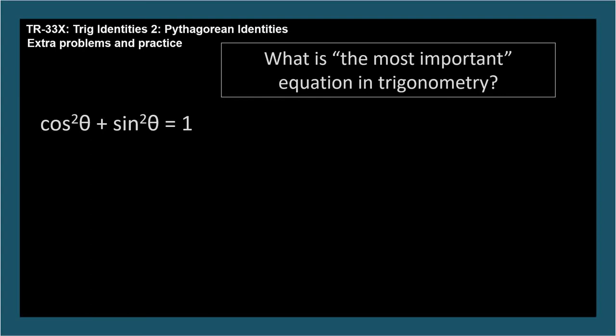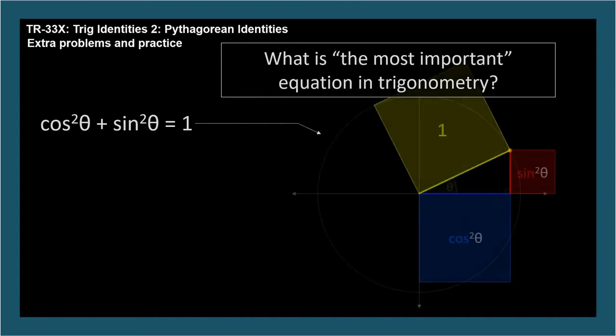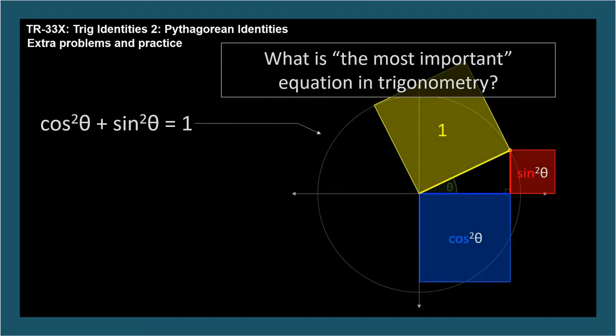But don't forget the squares. Cosine theta plus sine theta equals 1 is not an identity. Here's a Pythagorean theorem diagram of this most important trig equation.